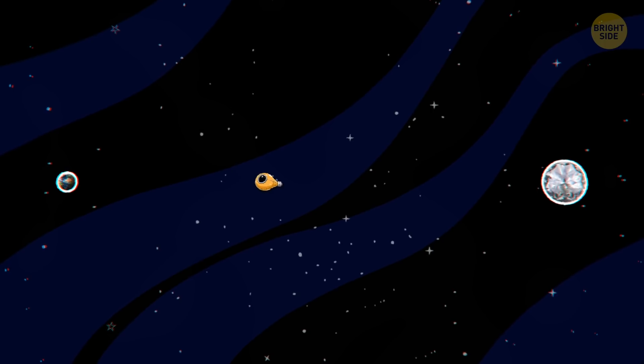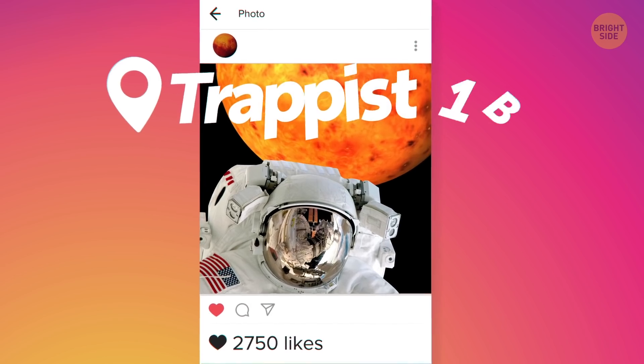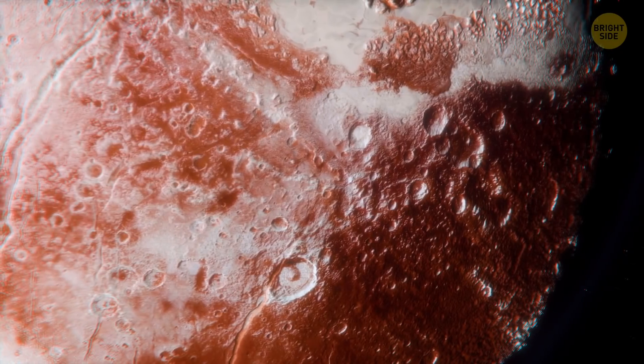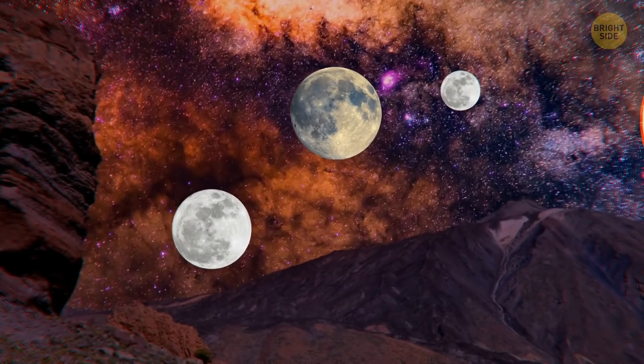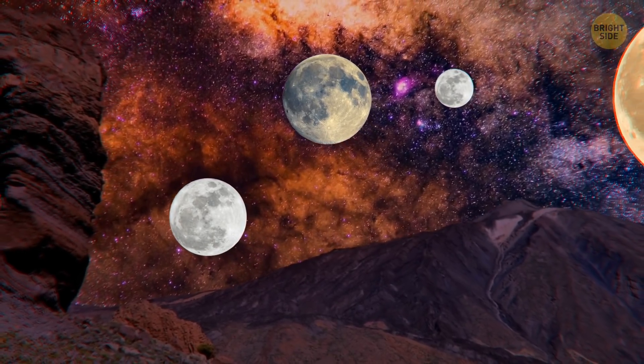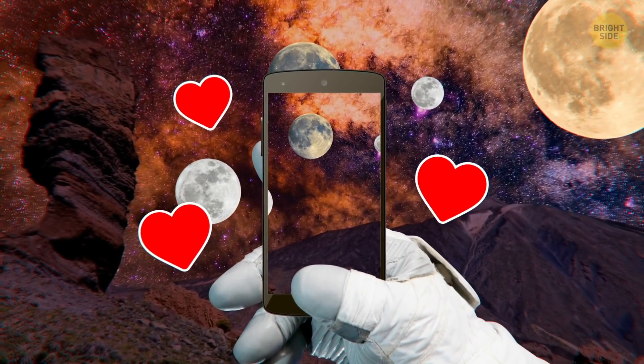You'll get the best pictures for your social media on TRAPPIST-1b. Orbiting its red star along with six other major planets, it must have magnificent panoramas at night. With up to six moon-like objects in the night sky, you'll be swimming in likes.